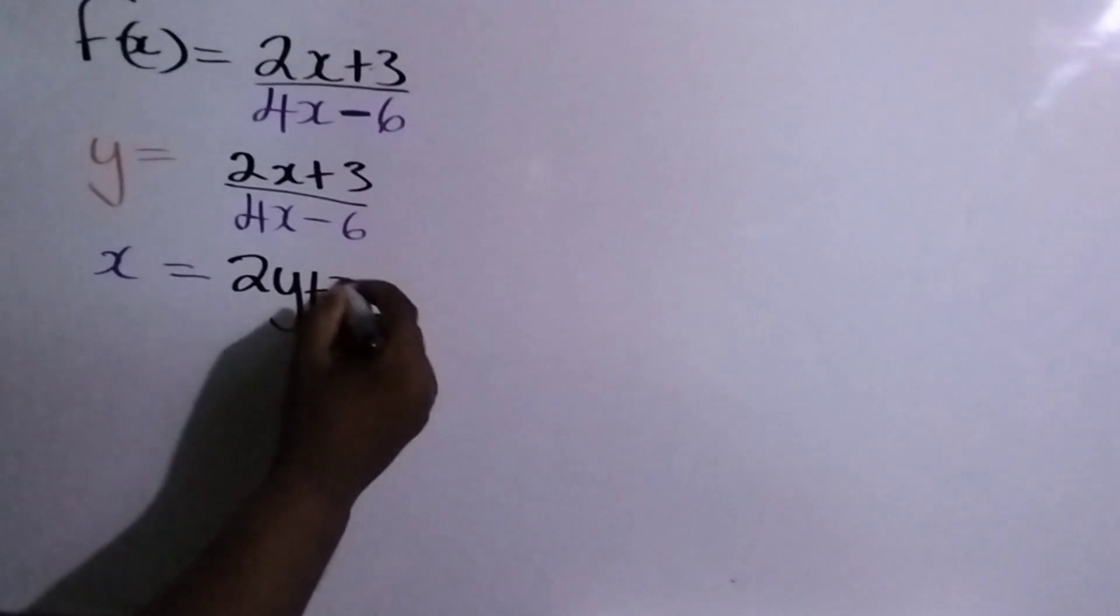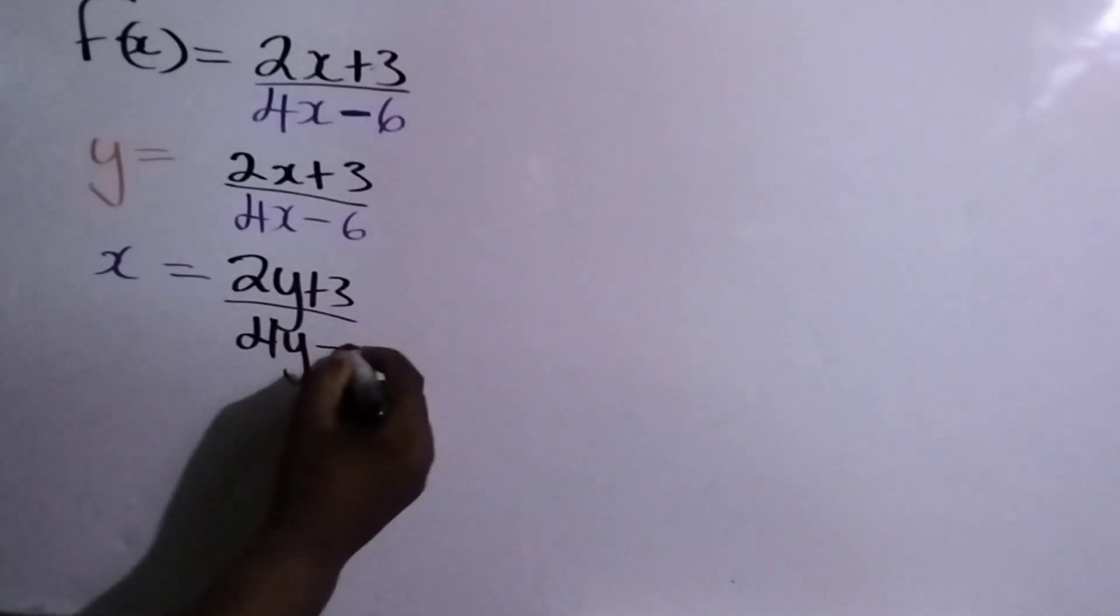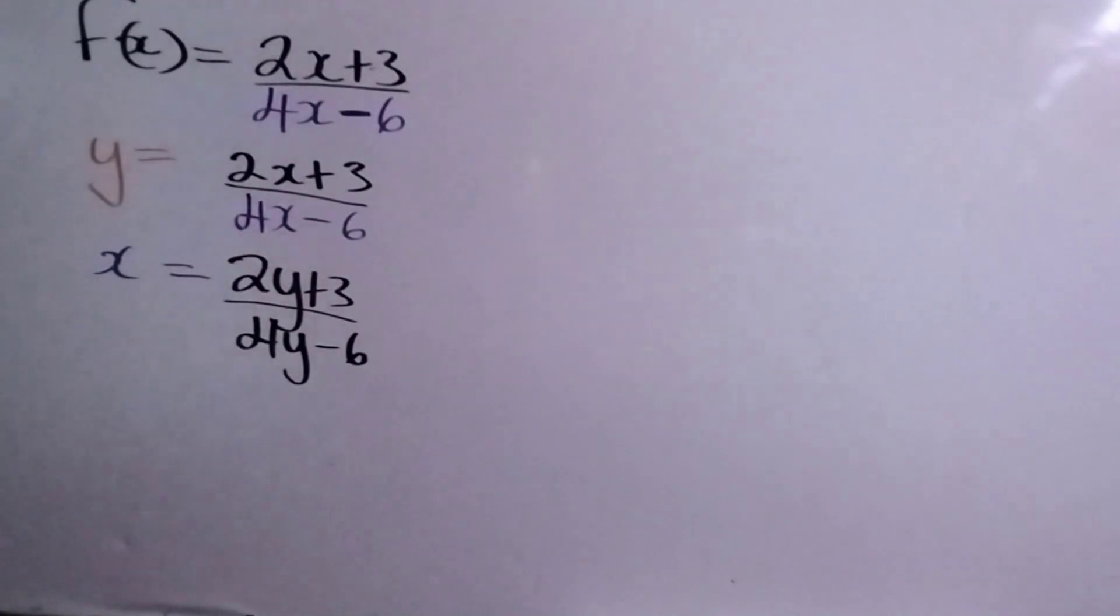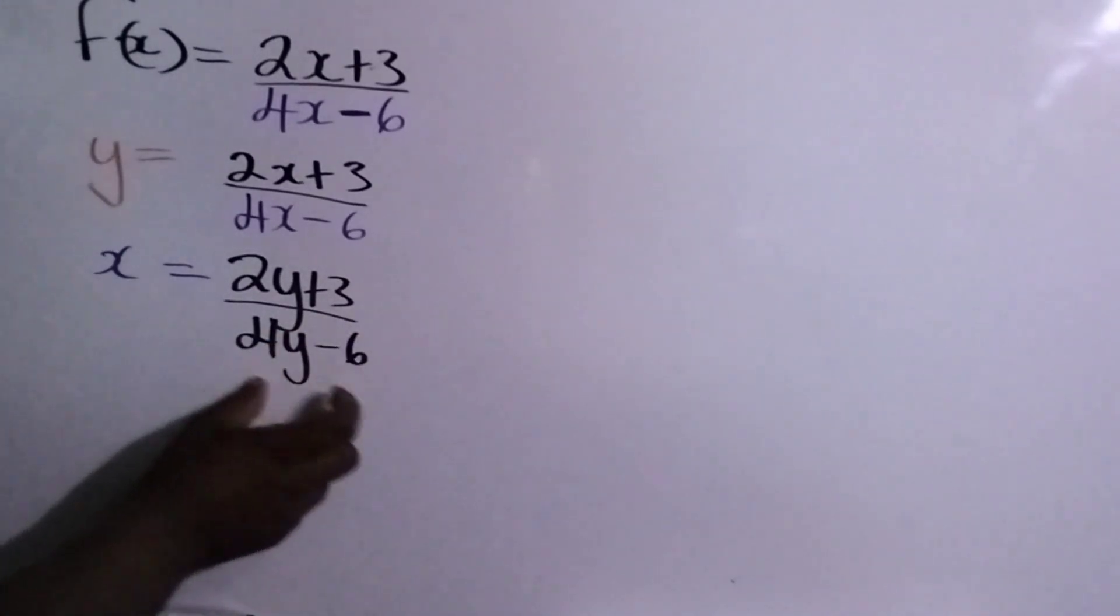So right here this would be x equal to 2y plus 3, remember we're changing all the x to y, divided by 4y minus 6. When we do not know what we're going to do, we're going to be solving for y. We're going to make y the subject of the formula.